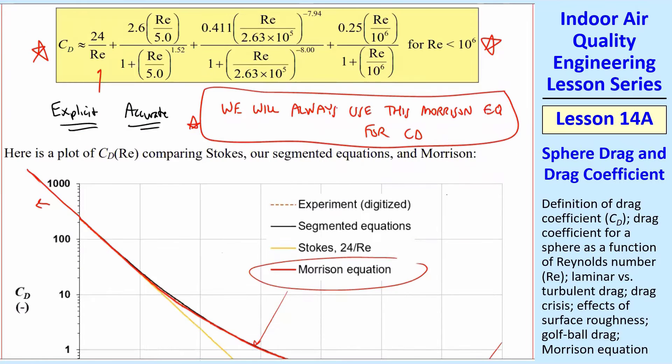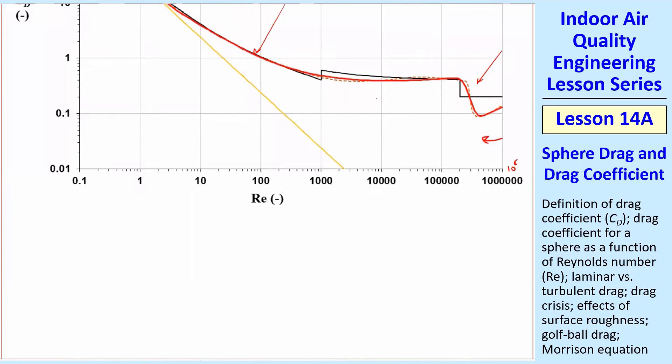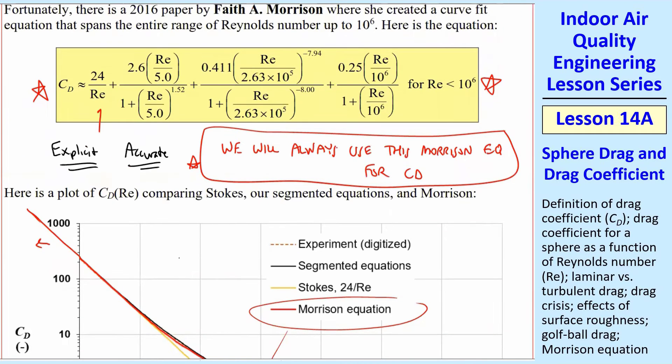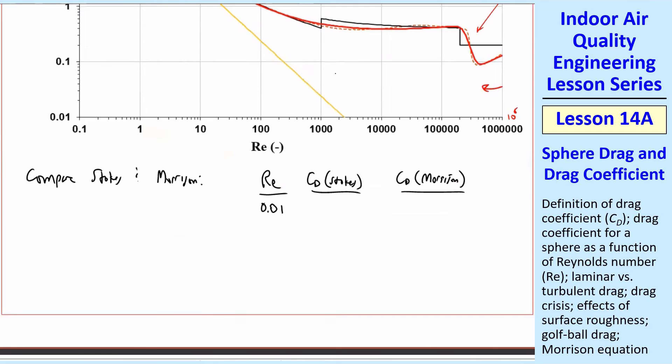So this will be our workhorse equation, and I just wanted to show you how it compares with Stokes. I did these calculations, and by the way, you should verify these. Make sure you know how to use the Morrison equation. Program it into your favorite software. So let's just list Reynolds number and CD for Stokes and CD for Morrison. So let's start with a very small one like 0.01. Stokes is trivial. You can do this in your head. 24 over 0.01 is Stokes, just that first term. So that gives you 2,400. What does Morrison give you? It gives you 2,400.15. So it's really close.